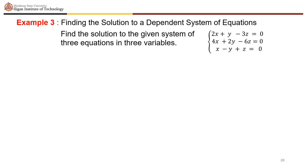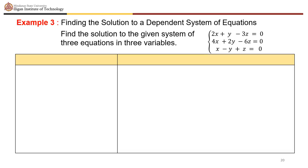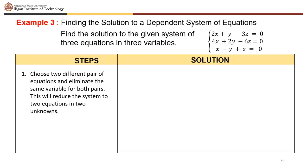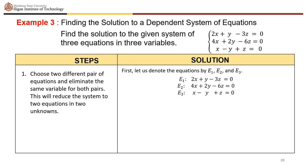Example 3 involves finding the solution to a dependent system. The given system is: 2x plus y minus 3z equals 0, 4x plus 2y minus 6z equals 0, and x minus y plus z equals 0. Denote these as e sub 1, e sub 2, and e sub 3 respectively.